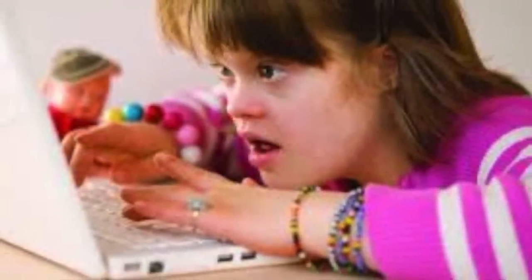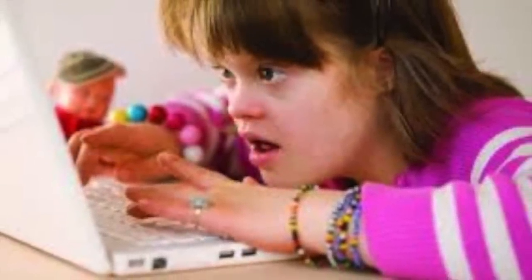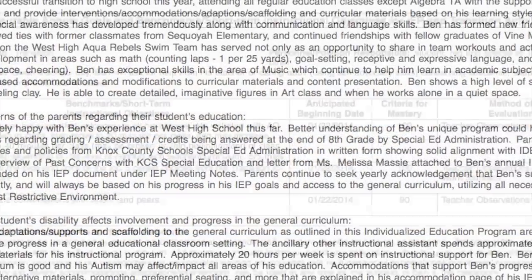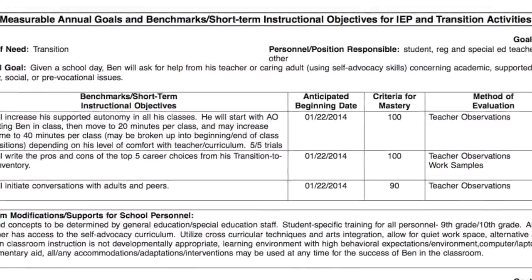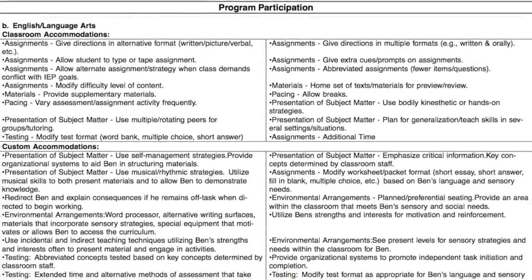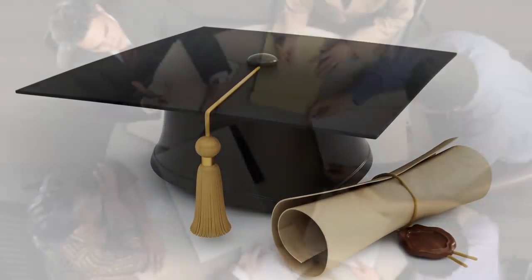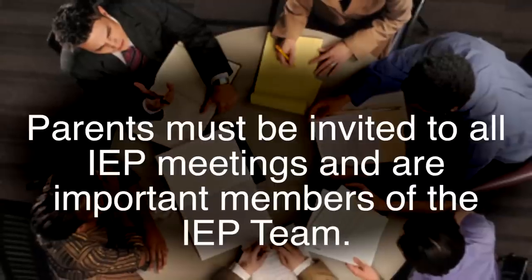IDEA required that every child with a disability that affects his or her education would have an Individualized Education Program, or IEP. The IEP is a document created by a team that states how the child is going to be educated, how the student learns in the most effective way, states short-term and long-term goals, and a plan for graduation.